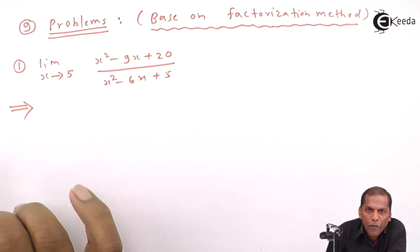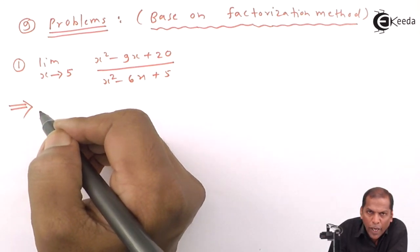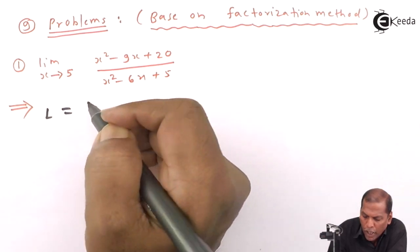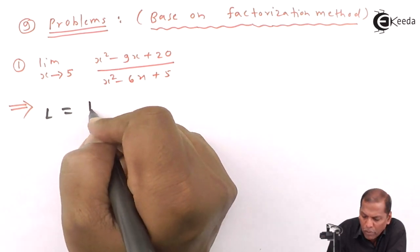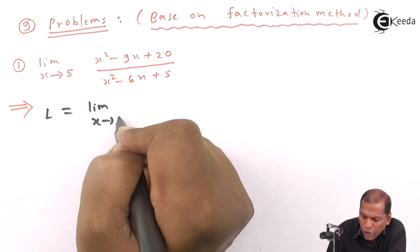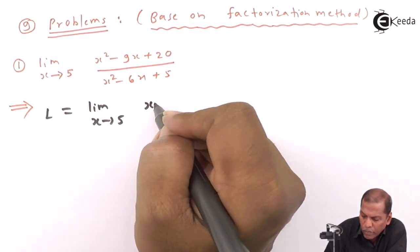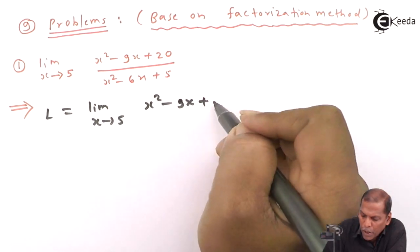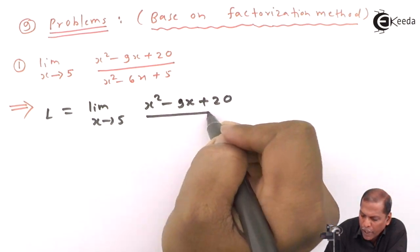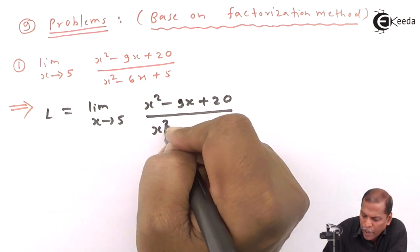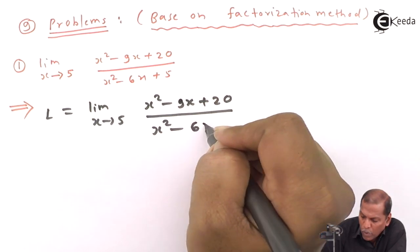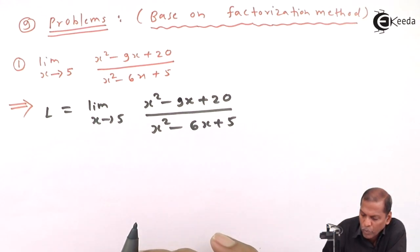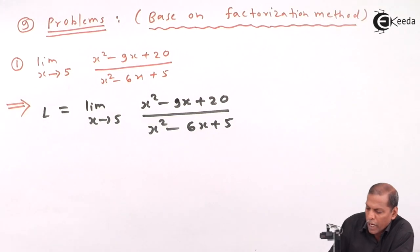Now let's see the solution. First of all, L equals limit as x approaches 5 of (x² - 9x + 20) divided by (x² - 6x + 5). Now here, the last term 20 can be factorized.